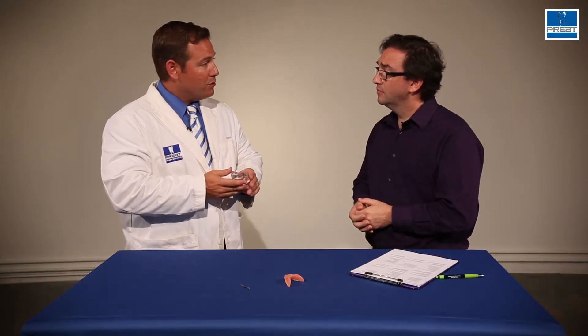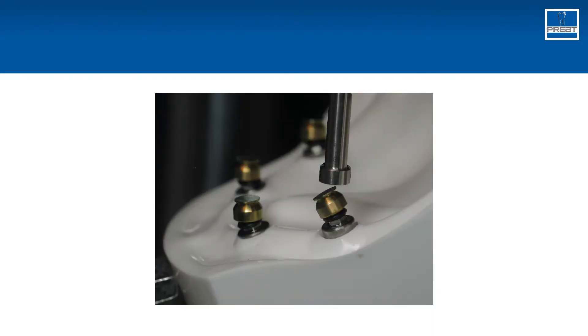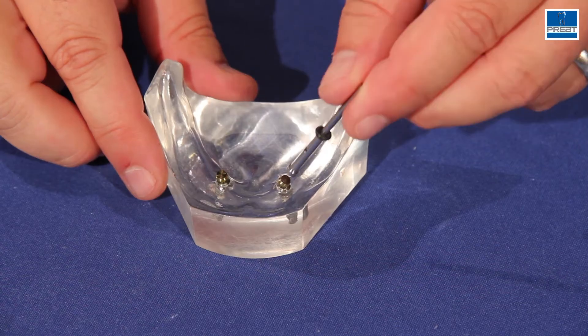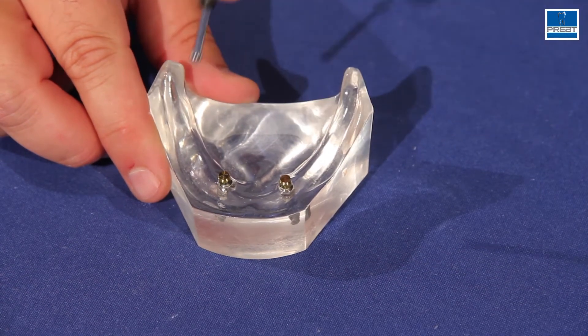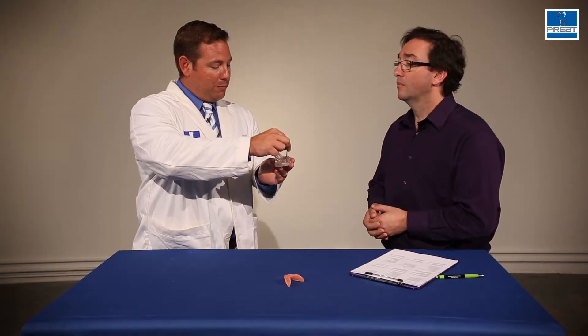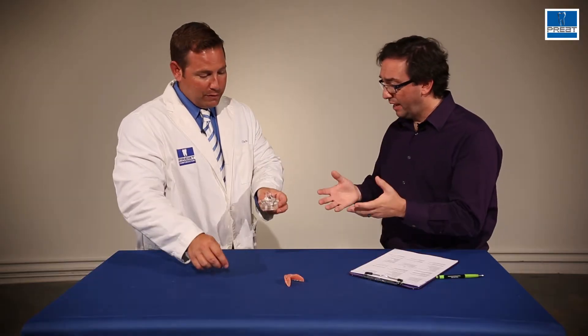That makes a lot of sense. How do you get them parallel? So there's two ways you can do it. One is in the laboratory. We have a laboratory mandrel that goes in the surveyor, and once you find the path of insertion or the draw you want for one, move it over to the other, and you can simply rotate and parallel using the paralleling mandrel. Okay, so that's at the lab? Exactly.